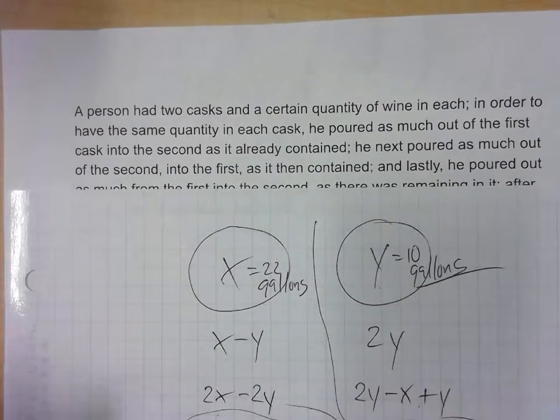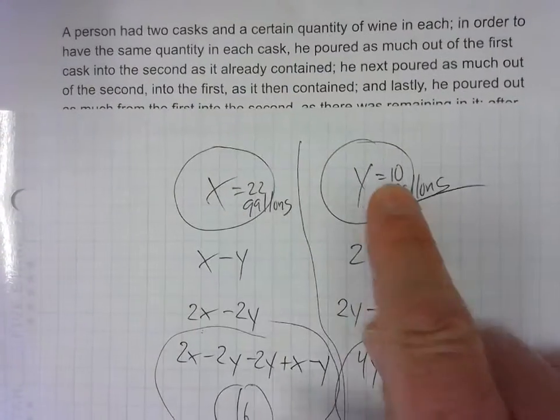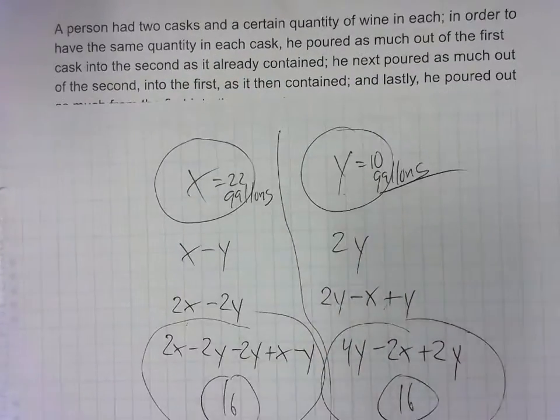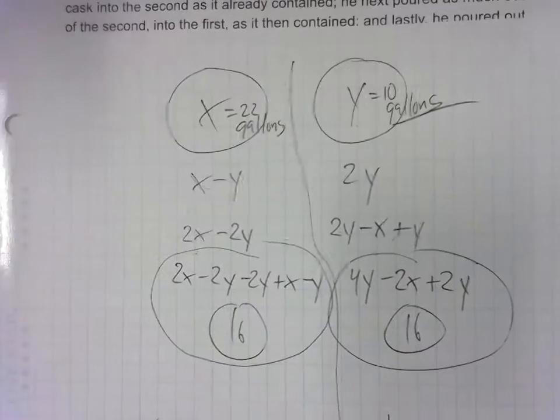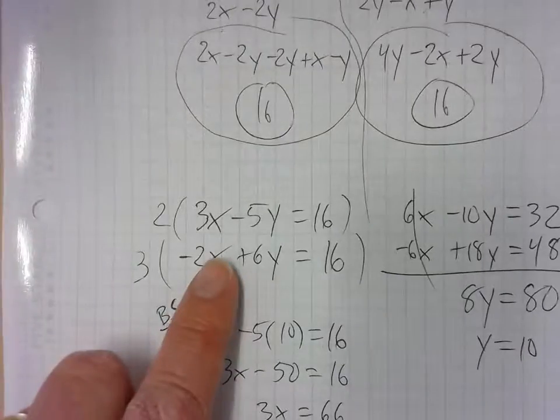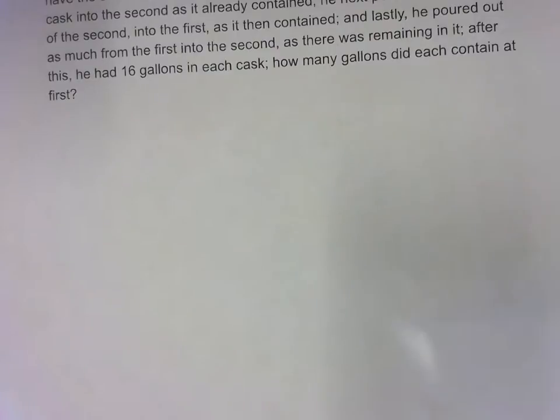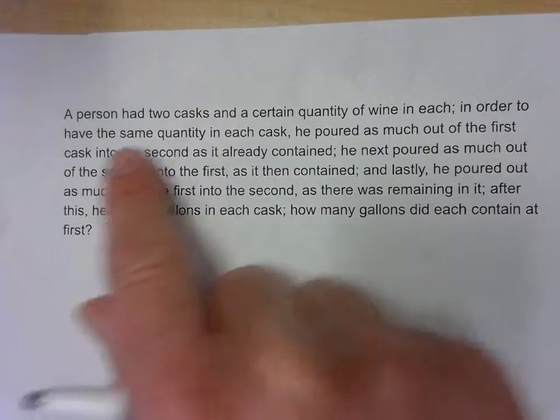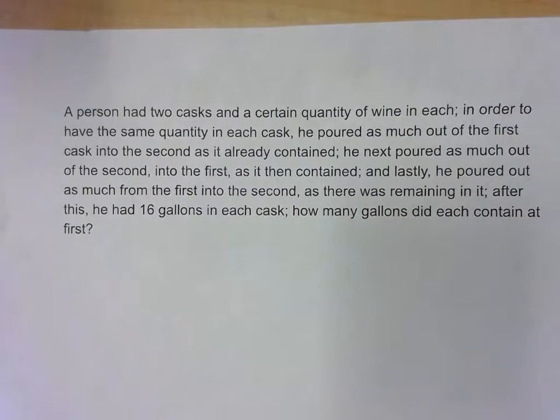And then we did the shuffling back and forth. So we took 10 and poured it in there, made this 20, made that 12. Then we shuffled it back and forth until we got 16 in each. So there's an ebb and flow of the wine between the two. So it's a system of equations problem, which is a common thing in algebra one. But what's not common is the fact that the story problem is about casks of wine from this very old algebra book.